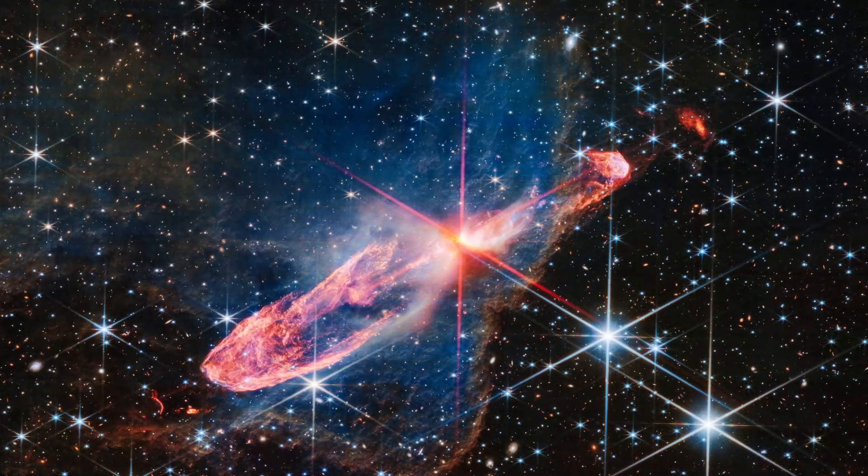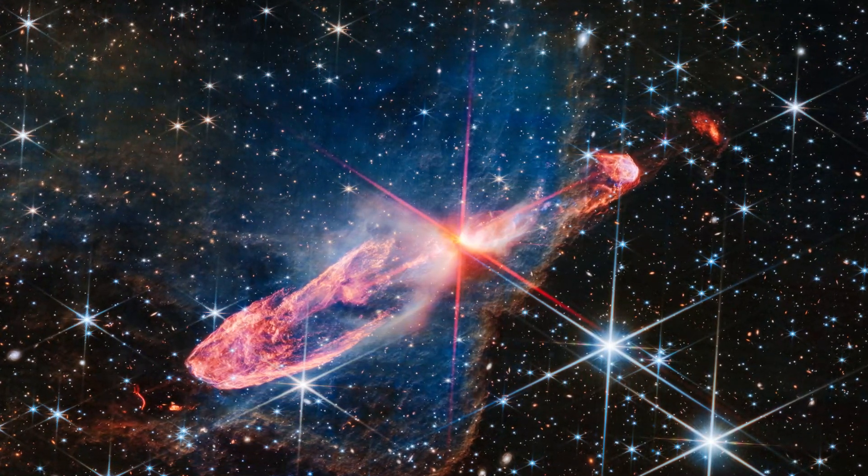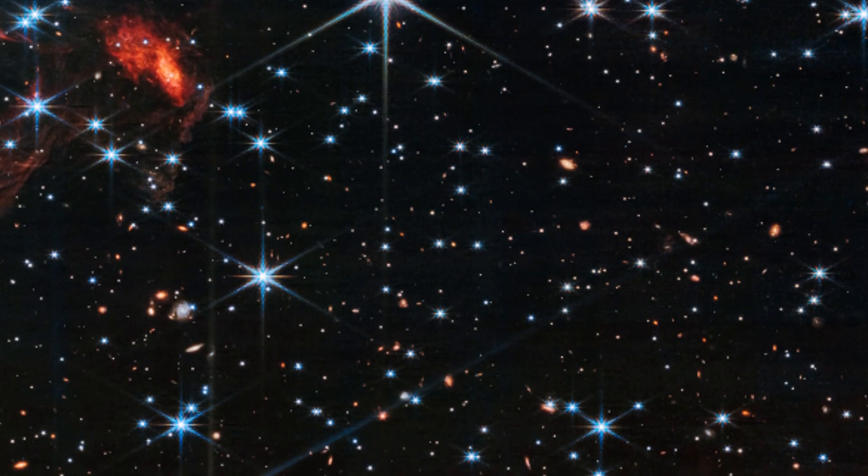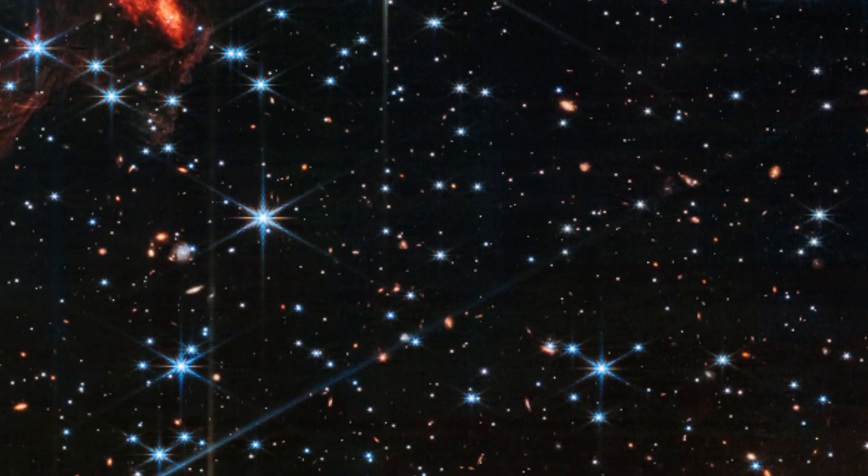Over millions of years, the stars in Herbig Haro 4647 will fully form, clearing the scene. The background of the image is dotted with a profusion of extremely distant galaxies.